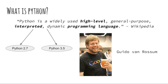So what is Python? According to Wikipedia, Python is a widely used, high-level, general-purpose, interpreted dynamic programming language. To keep things short, Python is a high-level programming language that must be interpreted by a program, also known as an interpreter, in order for the computer to understand your instructions.